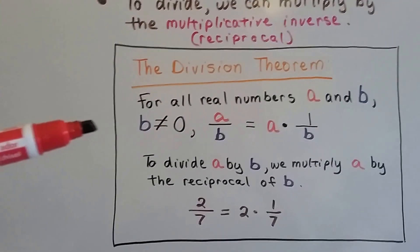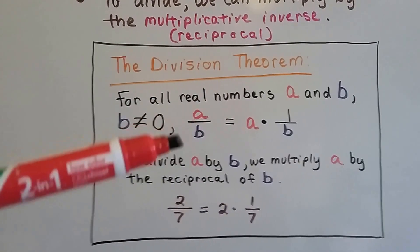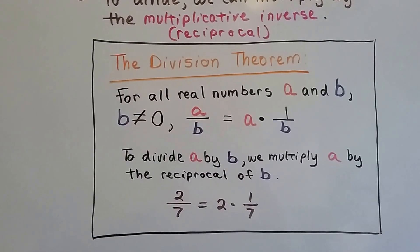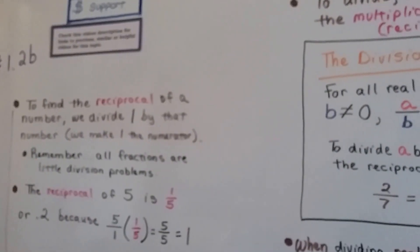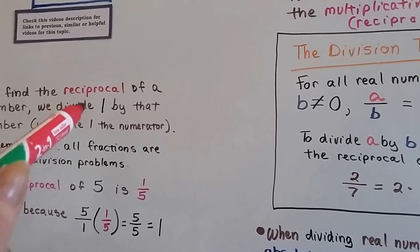The division theorem says for all real numbers a and b, as long as b is not zero, a over b is the same thing as a times 1 over b. To find the reciprocal of a number, we divide 1 by that number. We make 1 the numerator.